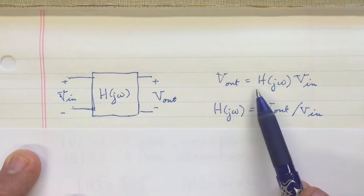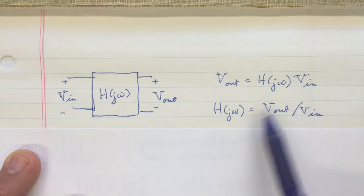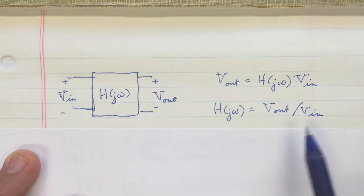So you can write that the output is equal to the transfer function times the input, or that the transfer function is equal to the ratio of the voltages, Vout = H(jω)Vin, so H(jω) = Vout/Vin.